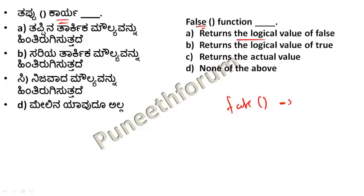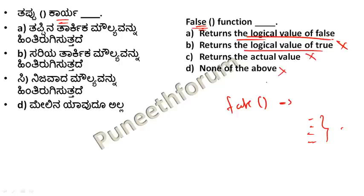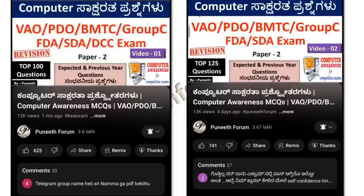The FALSE function returns the logical value of FALSE. It is a C/C++ program concept — false function. Option A is the right answer: it returns the logical value FALSE. Simple question.